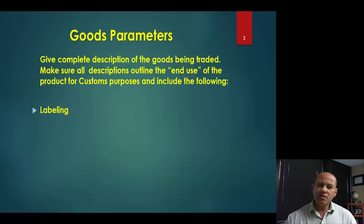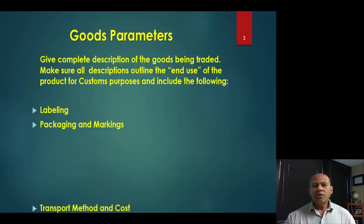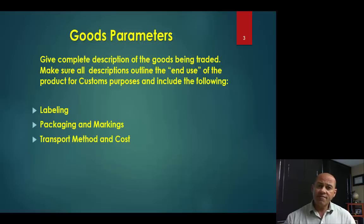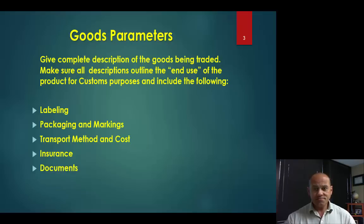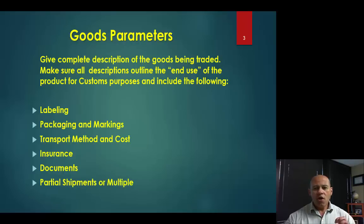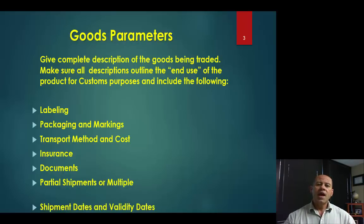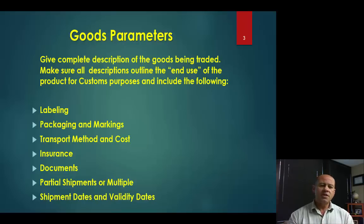Things like establishing what the labeling is for the goods, the packaging and the marking that's required. What the transportation methods are and the costs — this will heavily affect the amount that we're financing and the timing of that financing. Insurance: are the goods being covered under marine insurance or other types of insurance, and who's covering that insurance? What are the required documents for the transaction? Are partial shipments or multiple shipments allowed to fulfill a single order? And what are the critical dates — ship dates, dates to submit documents, and the validity dates negotiated for the transaction?